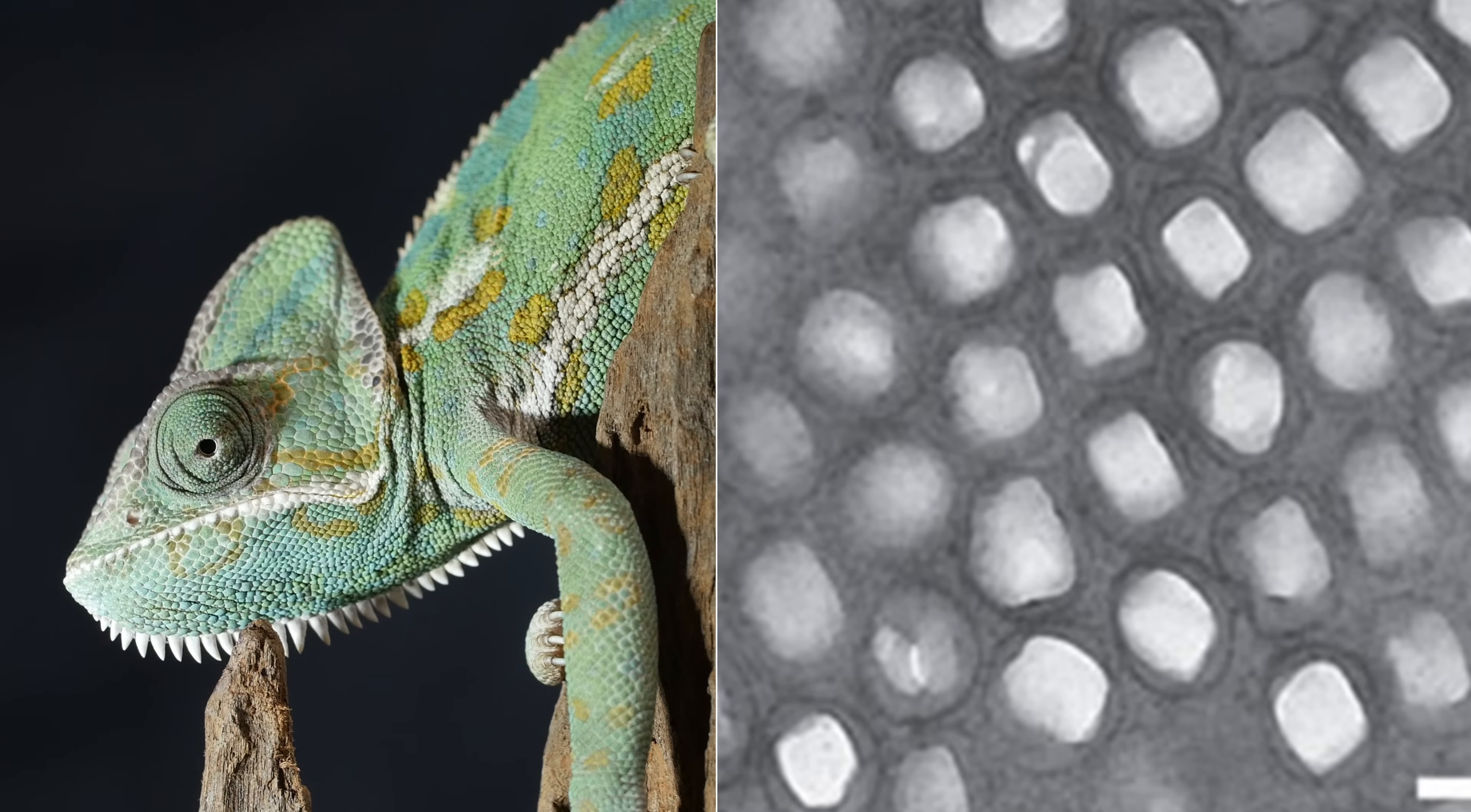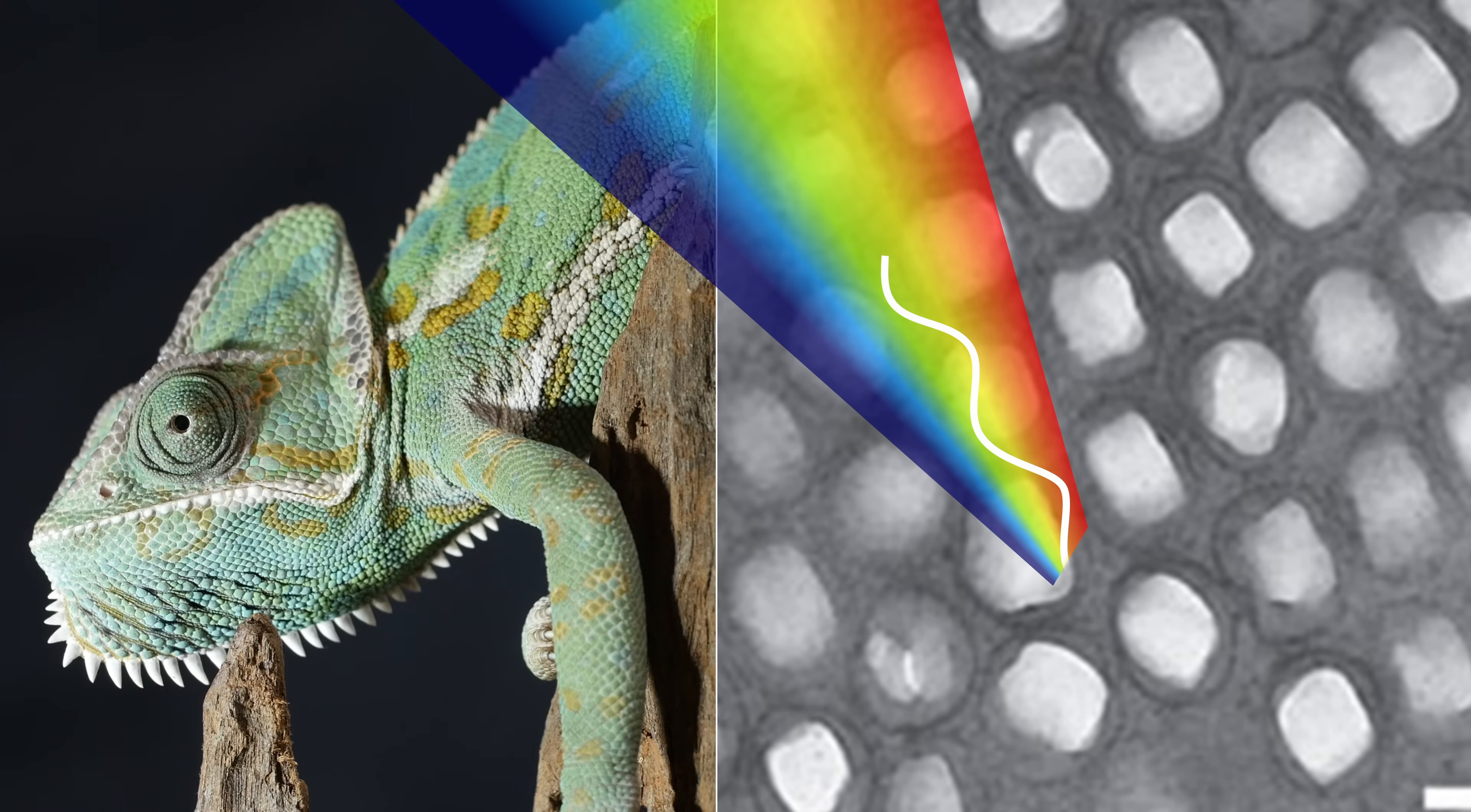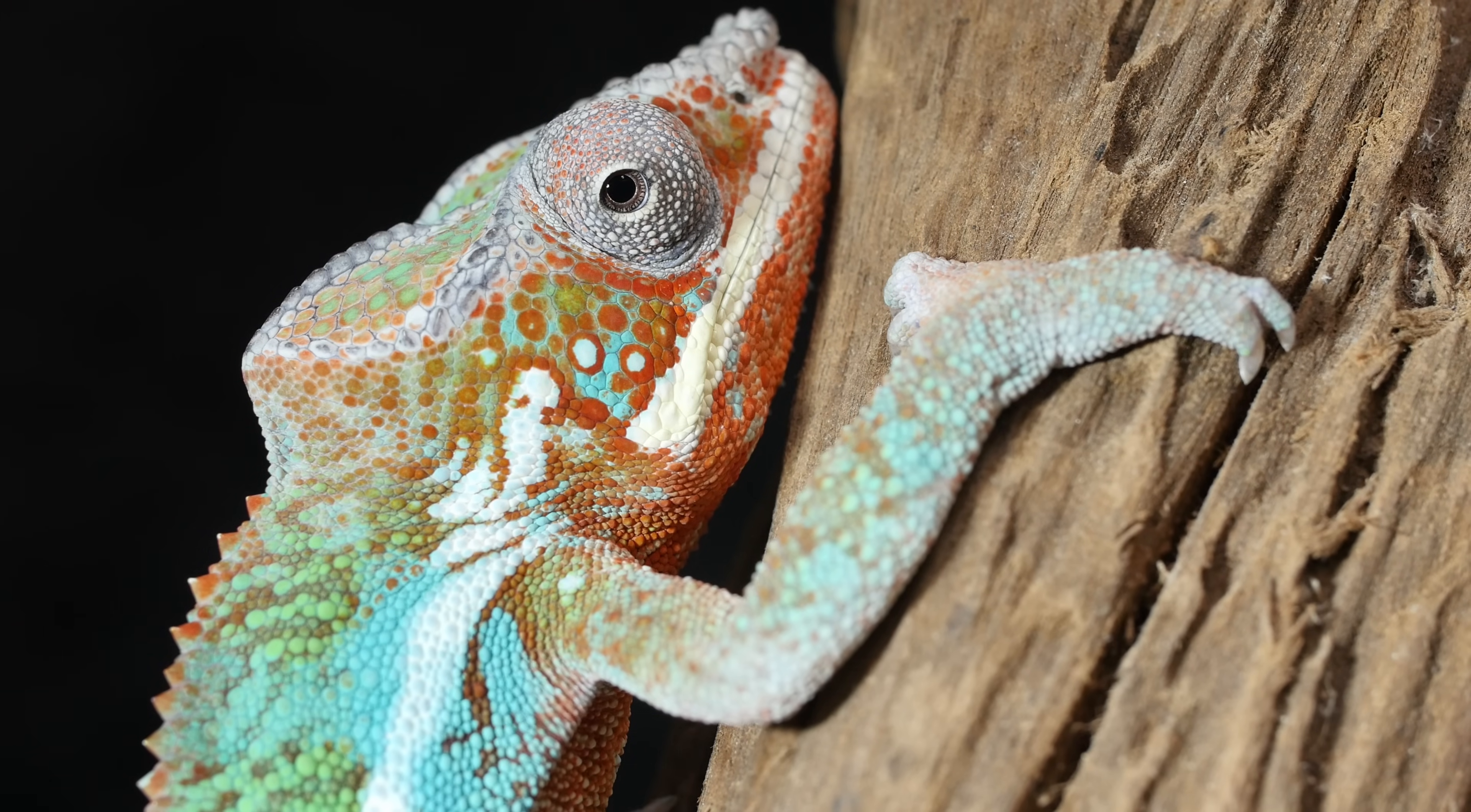The crystals are arranged in a three-dimensional lattice. When light hits the lattice, it shatters into different wavelengths. Some are absorbed and some bounce back. The result? Our eyes see green or red or blue.